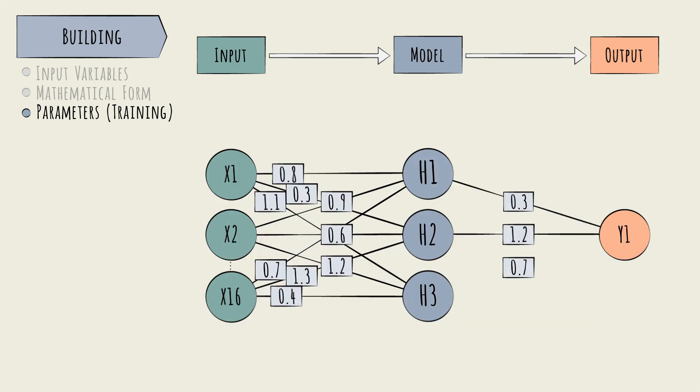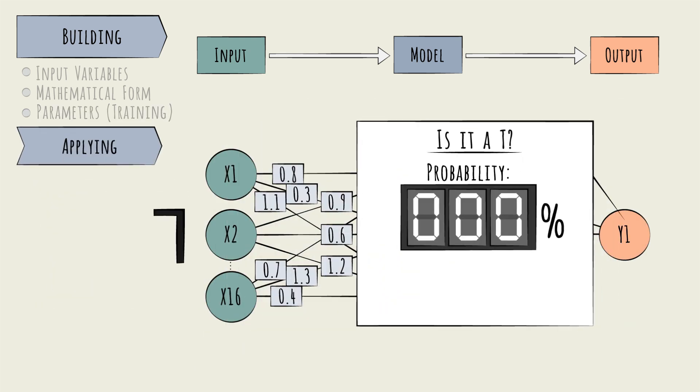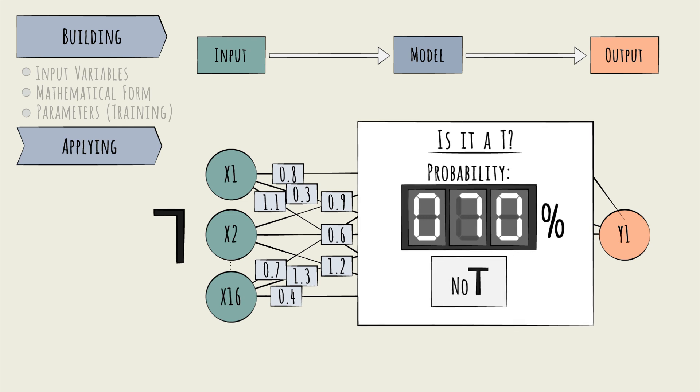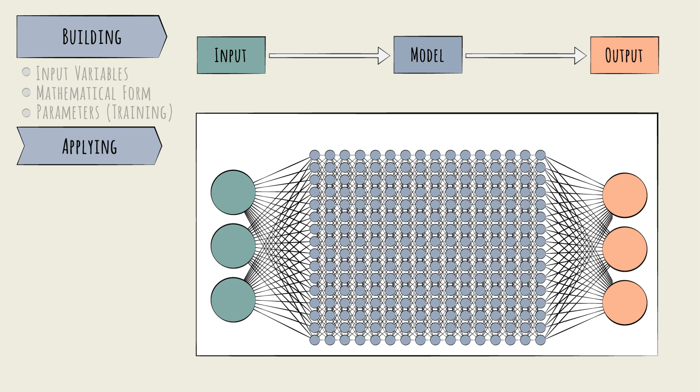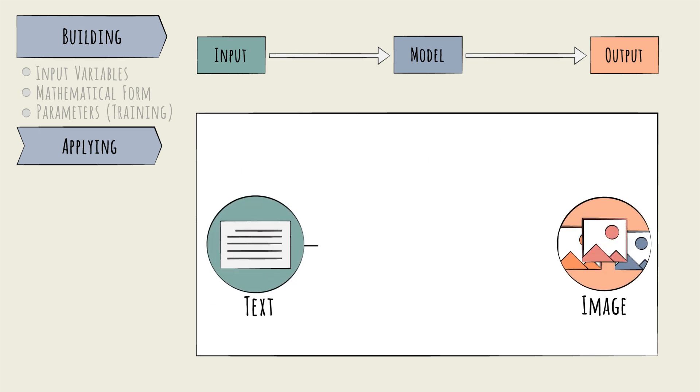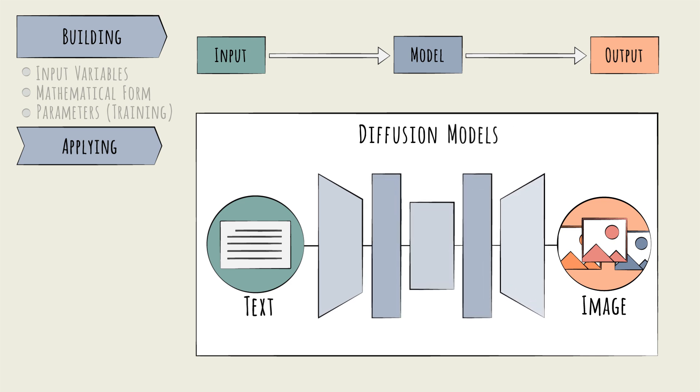Now that the model has been built, applying it means inputting another image. The model will decide, T or not. Real world image recognition models are of course more complicated, and they use a more complicated but similar neural network architecture, known as the convolutional neural network, or CNN. And when image models are used to generate pictures and videos, different architecture must be used. For example, so-called diffusion models.